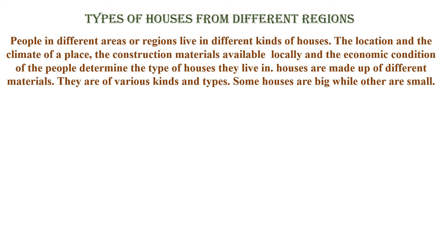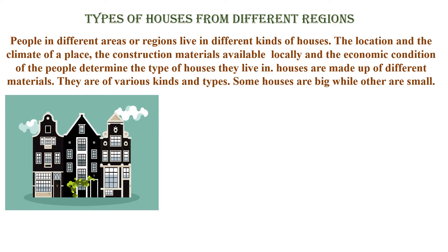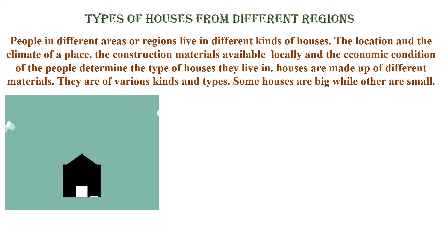People in different areas or regions live in different kinds of houses. The house where we live depends upon our surroundings. The location and the climate of a place, the construction material available locally, and the economic conditions of the people determine the type of houses they live in.